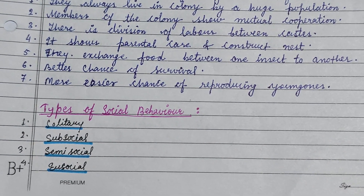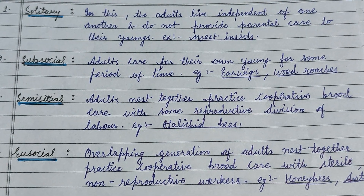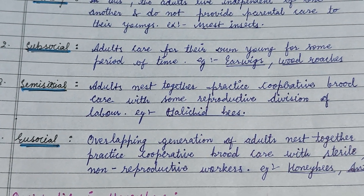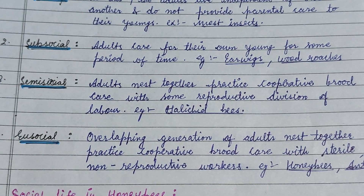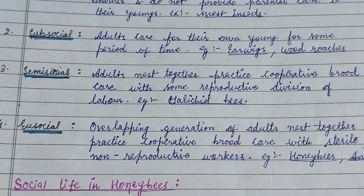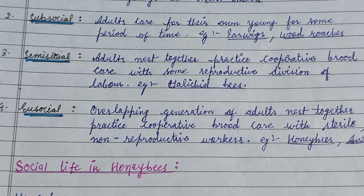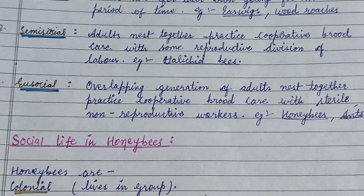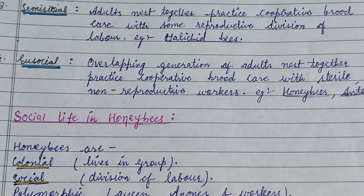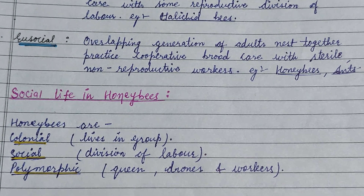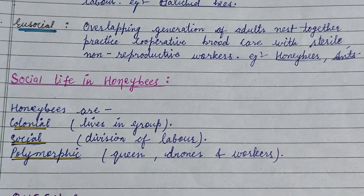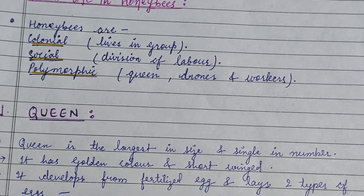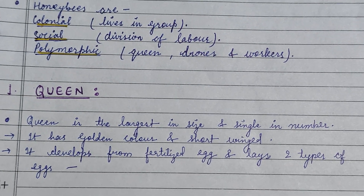Types of social behavior may be of four types: solitary, sub-social, semi-social, and eusocial. Solitary mostly includes insects on their own. Sub-social: adults care for their own young for some period of time. Semi-social: adults nest together, practice cooperative brood care with some reproductive division of labor. Eusocial is the complete true social behavior, exhibited by honeybees and termites.